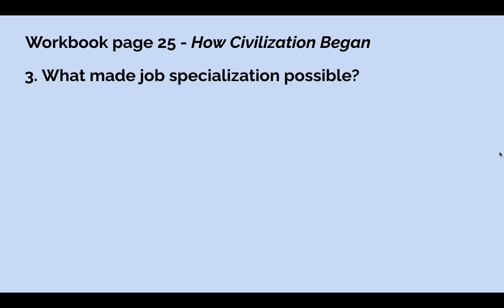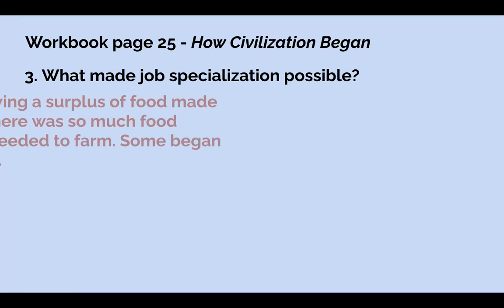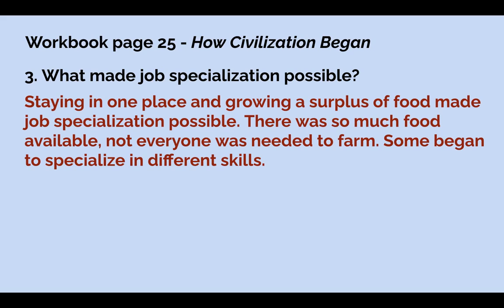Number three: what made job specialization possible? What enabled people to specialize in certain jobs rather than everyone farming? Staying in one place and growing a surplus of food made job specialization possible. There was so much food available they didn't need everyone to farm, so people began to specialize in different skills. How did those people get the food they needed if they weren't farming? They traded for food.